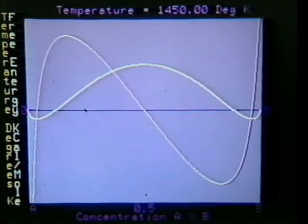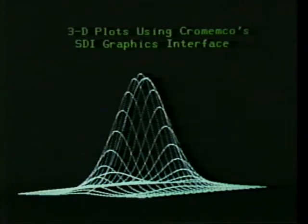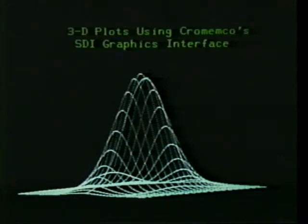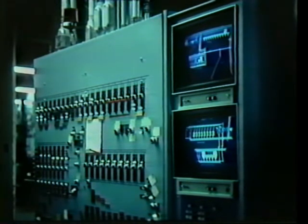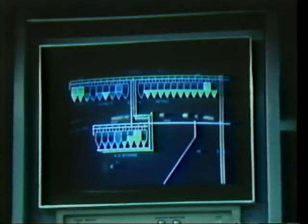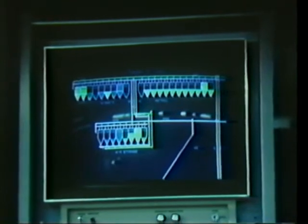The third area is the use of computer graphics in scientific and engineering applications. Here we show scientific data which is being plotted, and the next slide shows that you can actually plot a three-dimensional surface using computer graphics. One example is a company called American Computers and Engineers in Los Angeles, which uses our equipment in the design of structures, buildings, and bridges. The fourth area is probably the single largest usage area for computer graphics, and that's process control. This is a system actually at the MJB coffee factory, used to monitor the process of making coffee.